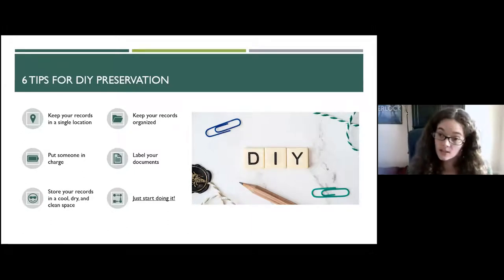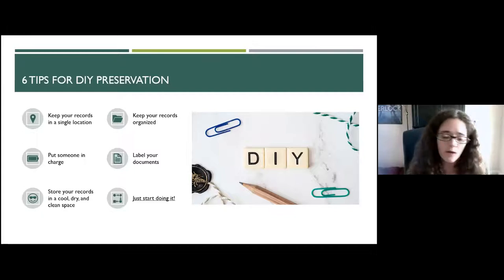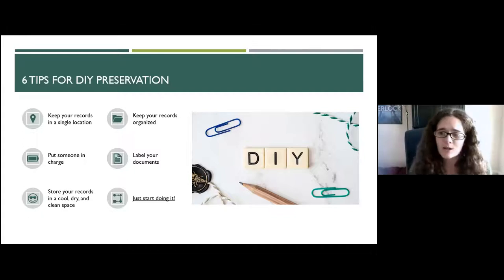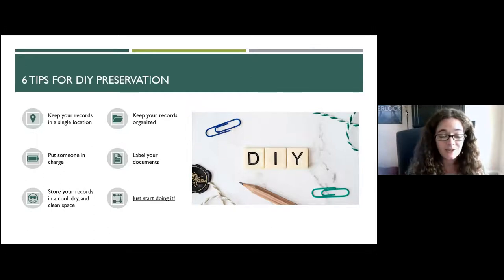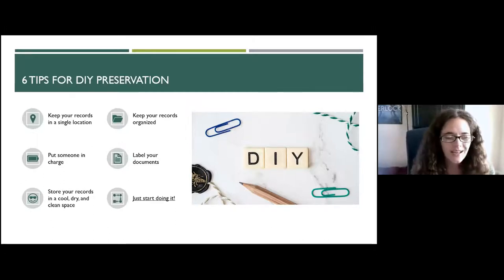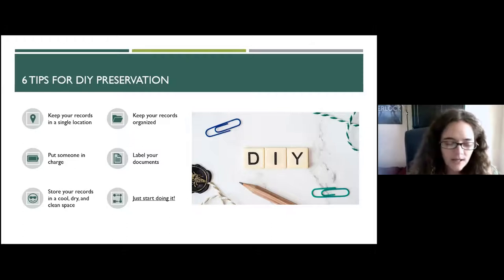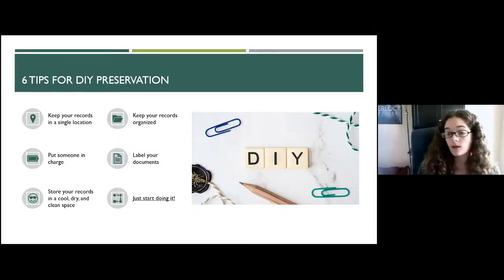Another easy way to get started is to keep your records organized. As we discussed with the vendor example, this makes information much easier to find when you need it. The arrangement doesn't have to be complicated — something as simple as keeping everything from one year together in a folder works well.